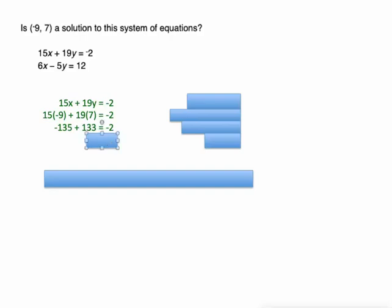19 times 7 is 133, and when you add those together you get -2, which is what the right side of the equation is too. So that point works in the first equation. Now we have to check it and make sure it is a solution to the second equation.